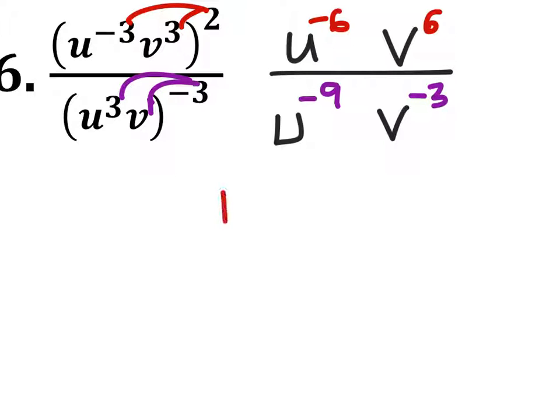Now we can split these up. We've got u to the power of negative 6 minus negative 9. And we've also got v to the power of 6 minus negative 3.